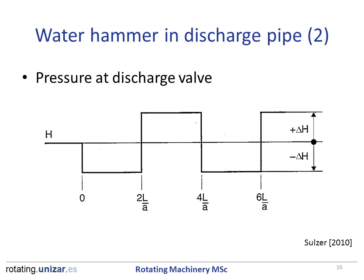As a result, this is the ideal wave pattern that we can find at the position of the discharge valve. Note the alternating pressure pattern between the maximum and minimum pressure values.